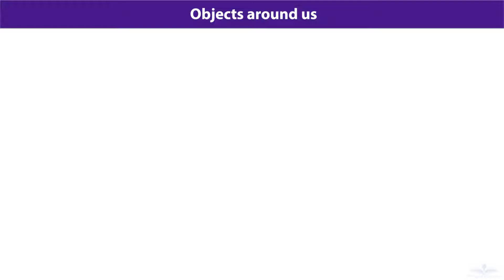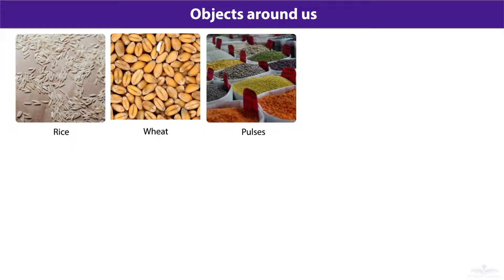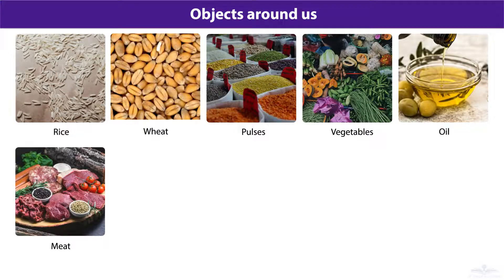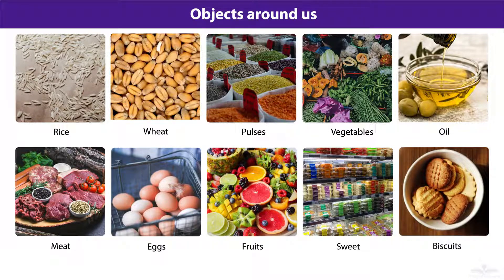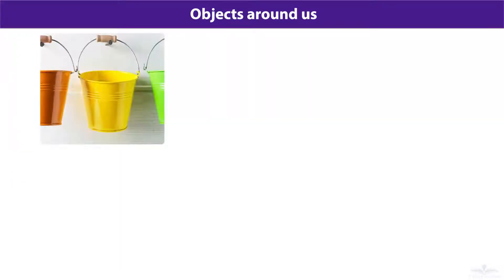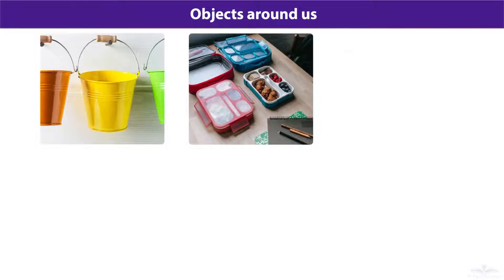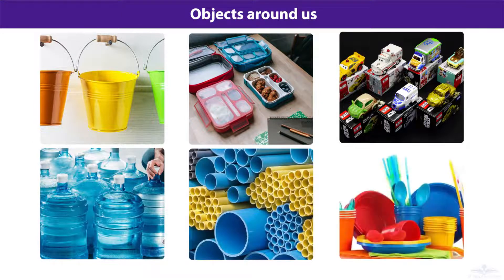Suppose we were looking for objects that are edible — items like rice, pulses, vegetables, oils, meat, eggs, fruits, sweets, biscuits, and so on. We could also make a group of objects that are made of plastic: buckets, lunch boxes, toys, water containers, pipes, utensils, and many such objects may find a place in this group.